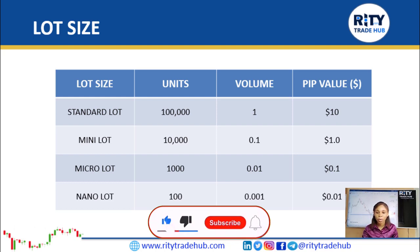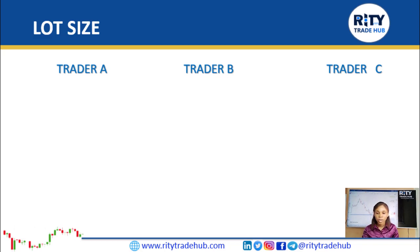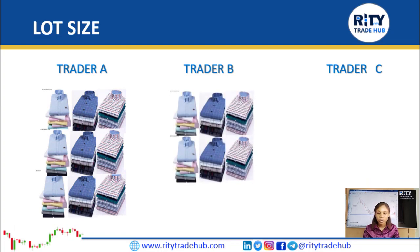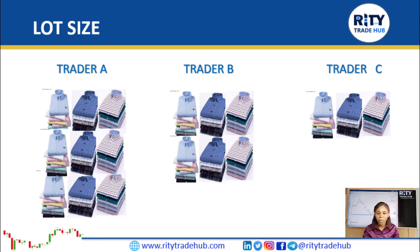To make this simpler, let's use a real-world analogy. Assume we have three traders — Trader A, Trader B, and Trader C — who deal in shirt wear. For them to make profits, they can't just buy a single shirt from the wholesaler; they need to buy in bundles. Trader A buys one hundred thousand bundles, Trader B buys ten thousand bundles, and Trader C buys only one thousand bundles.